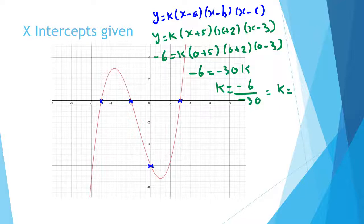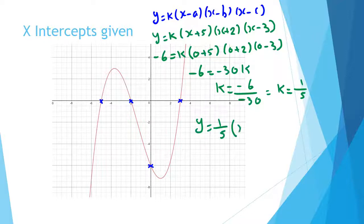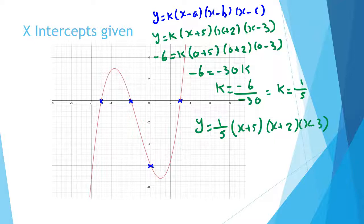So k equals 1 out of 5. Your equation is y equals one-fifth times (x plus 5)(x plus 2)(x minus 3). Sometimes you have two x-intercepts where one is repeated — we're going to do that in the next slides.